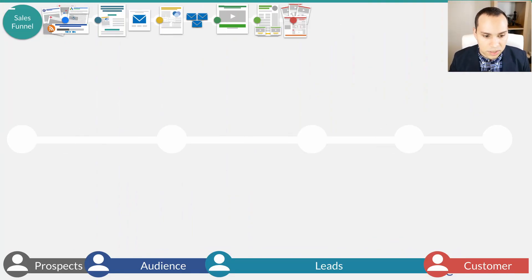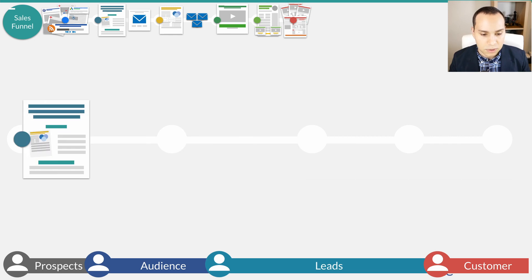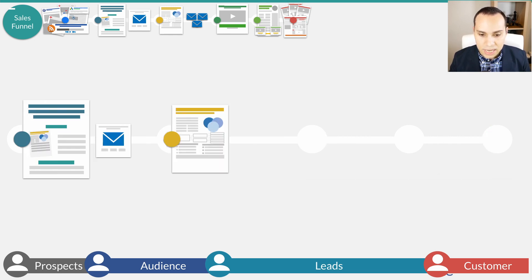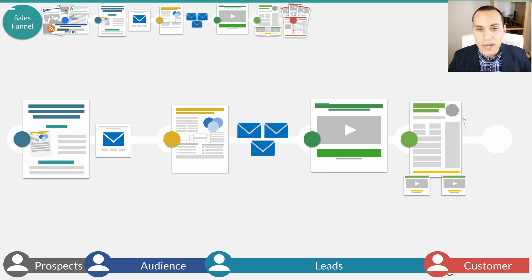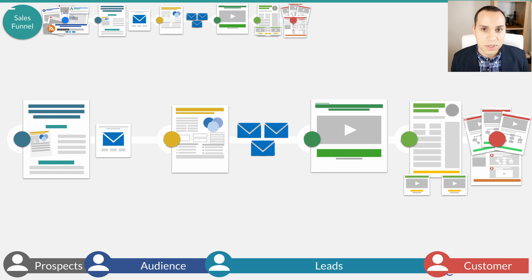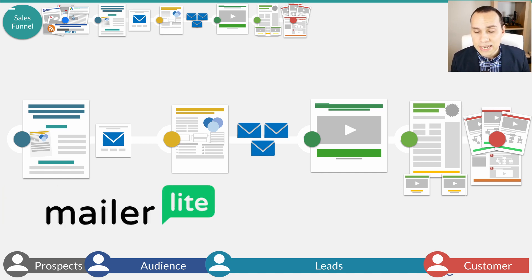We're going to create a landing page, send people to a confirmation page, then deliver the lead magnet via an automated email sequence. We'll use that email sequence to drive traffic to a sales page, and on the sales page have a link to our checkout. In order to do this, we're going to be using MailerLite and Stripe.